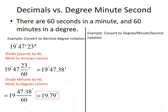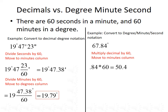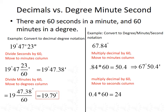For the next example, we convert from decimal notation to degree-minute-second notation. We're given an angle of 67.84 degrees. First, multiply the decimal 0.84 by 60 and move that to the minutes column: 0.84 times 60 gives 50.4, so we have 67 degrees and 50.4 minutes. Then multiply the decimal in the minutes column, 0.4, by 60: that gives 24, which moves to the seconds column. So the angle measures 67 degrees, 50 minutes, and 24 seconds.